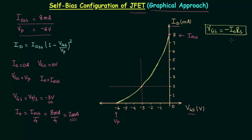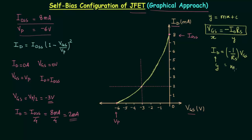This equation VGS = -ID·RS is the equation of a straight line. Comparing with Y = MX + C, here VGS is X and ID is Y. Rearranging gives ID = (-1/RS) × VGS. So the slope M equals -1/RS and the intercept C equals 0, meaning this straight line passes through the origin.